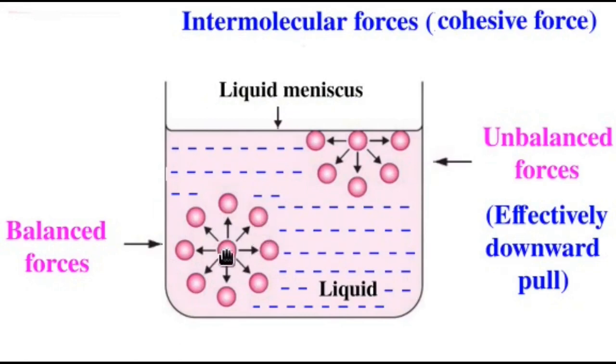If you consider a molecule deep inside the liquid, then each molecule will be attracted towards all other sides by the other molecules in the liquid. Hence, we have a case of balanced forces on this particular molecule. So, there is no preferential force in any direction. But, when we consider the molecules on the surface of the liquid, you can see that there are no molecules on the upper side to attract the molecules. Hence, there are unbalanced forces. So, effectively, there is a downward pull on each molecule on the surface. Now, the surface of the molecule is usually known as the liquid meniscus. Now, these forces of attraction between molecules of the same kind are called cohesive forces.